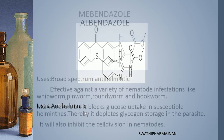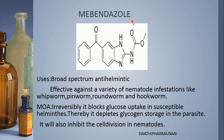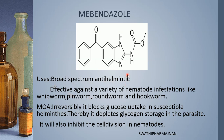Albendazole is an anti-helminthic drug. The next structure is mebendazole, which also contains the basic nucleus benzimidazole. Between the benzimidazole and one more phenyl ring, there is a carbonyl bridge, and an NH-COO-CH₃ group is common with albendazole. It is a broad spectrum anti-helminthic. There are two types of drugs — narrow spectrum and broad spectrum.